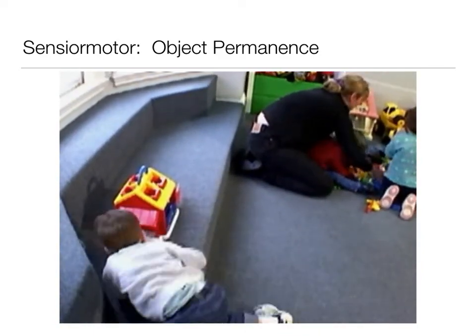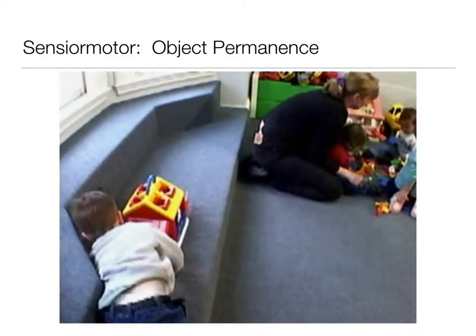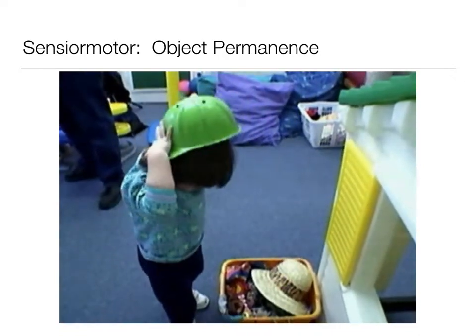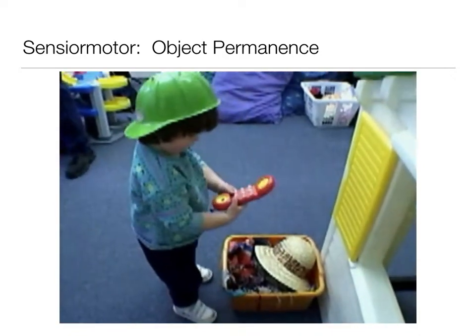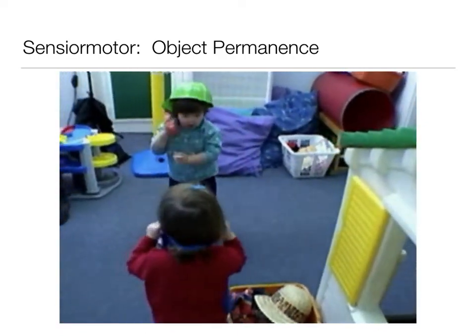Being able to represent objects mentally is an important cognitive change, as it allows children to think about things they can't see or touch — using insight and mental experimentation for solving problems instead of trial and error. That walked us through the various sub-stages of the sensorimotor period. The video also did a good job of talking about object permanence.